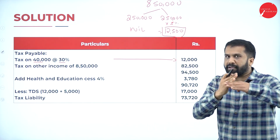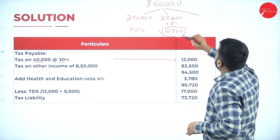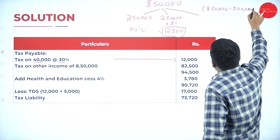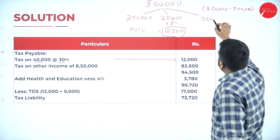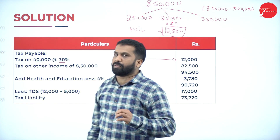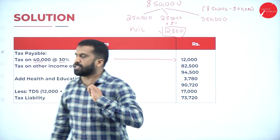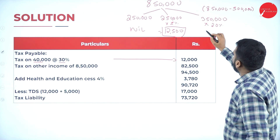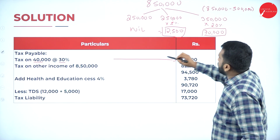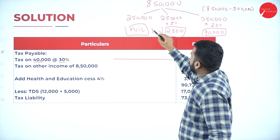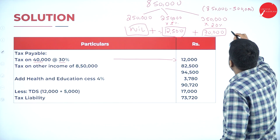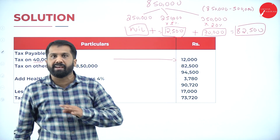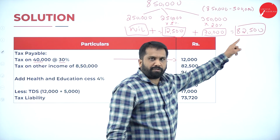Next slab: two lakh fifty thousand to five lakh at five percent gives twelve thousand five hundred. Five lakh is covered; remaining is eight lakh fifty thousand minus five lakh equals three lakh fifty thousand. On three lakh fifty thousand at twenty percent, you get seventy thousand. Total slab tax: nil plus twelve thousand five hundred plus seventy thousand equals eighty two thousand five hundred.